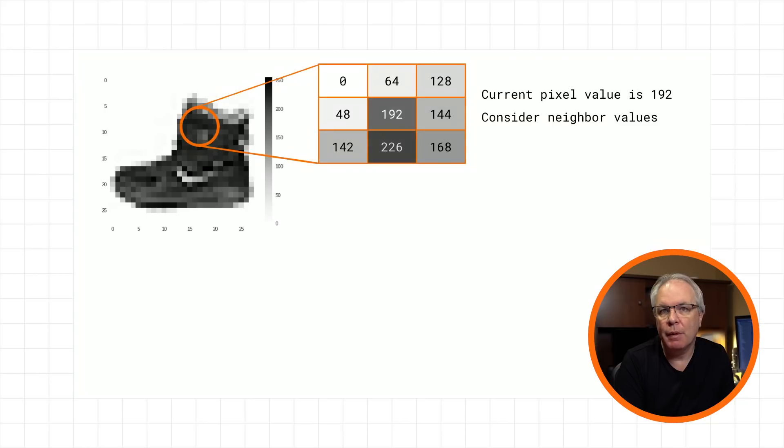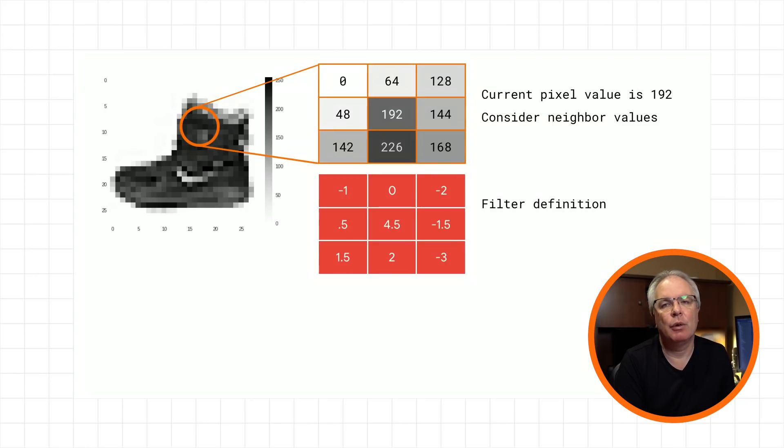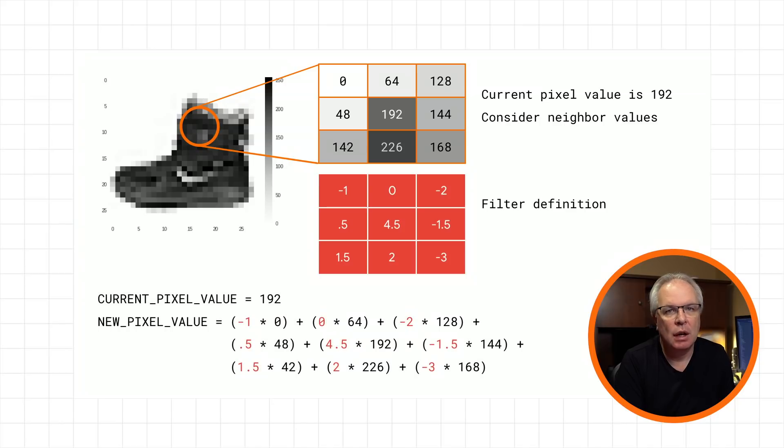On the left here, I have an image of a boot from the Fashion MNIST data set. On the right, I have a representation of nine of the pixels in the image. I'm going to call the center one my current pixel, and all of the others are its neighbors. Here, I define a filter, which is a set of values in the same shape as my pixel and its neighbors. So for example, if I had one neighbor in each direction for a three-by-three grid of pixels, I'd have a three-by-three grid in my filter, too. Each value in the filter can be called a weight. So to calculate a new value for my pixel, all I have to do is multiply each neighbor by their weight, my current pixel by its weight, and then add them all up. And I'm going to do this process for every pixel in the image. The result will be a transformed image.